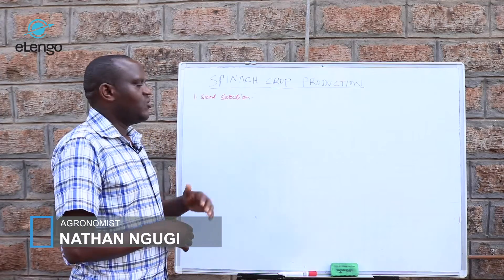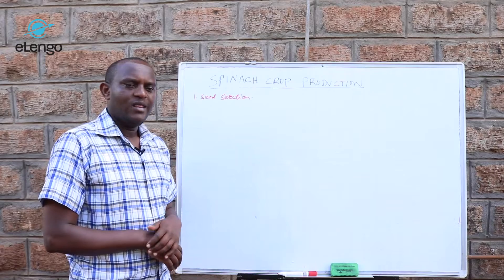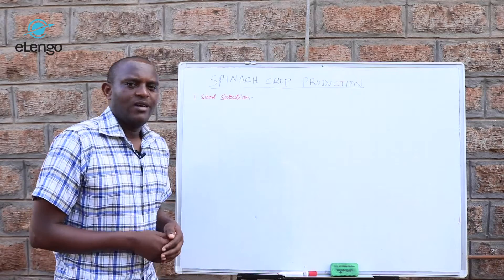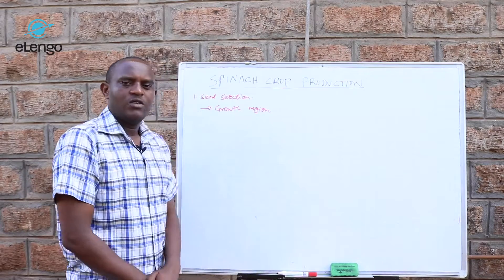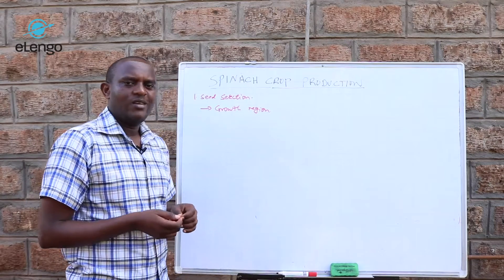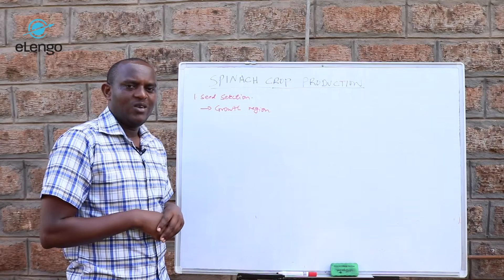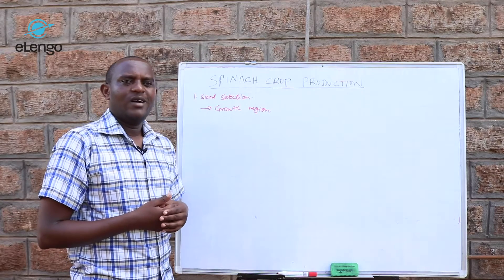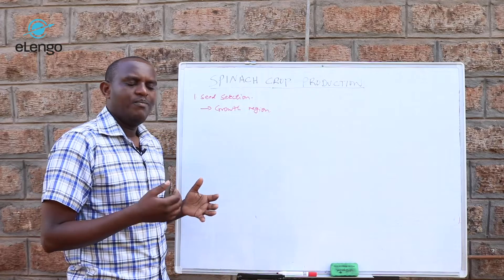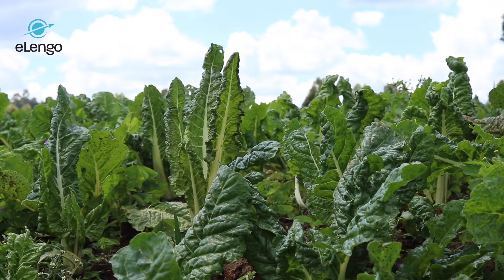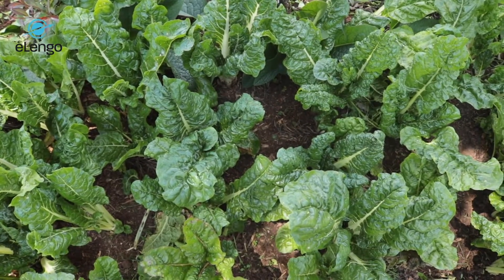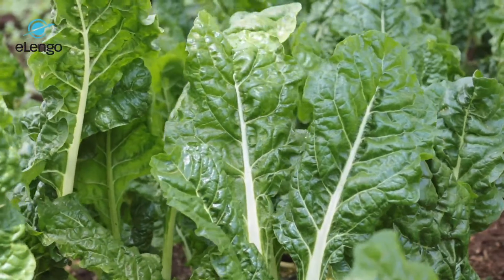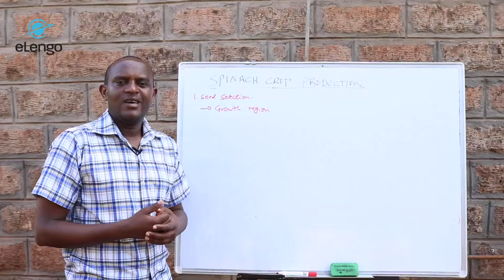We are going to look at seed selection, and in the seed selection part we are going to look at growth regions — basically where you can grow this spinach crop. The spinach crop can grow in many areas: low altitude, mid, and even high altitude. It can grow in areas where temperatures are high and where temperatures are low.